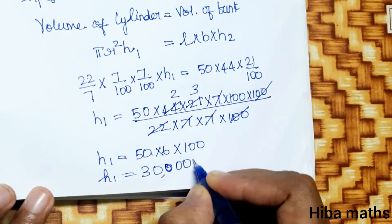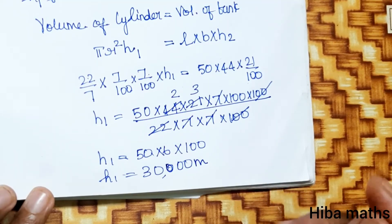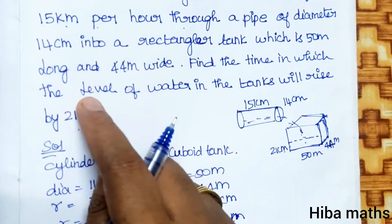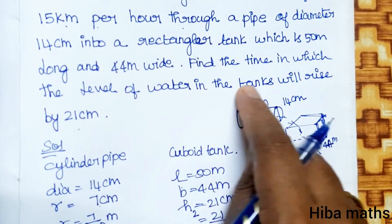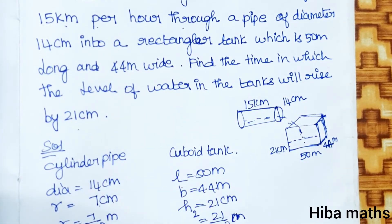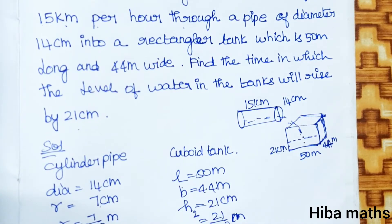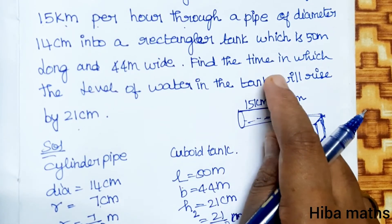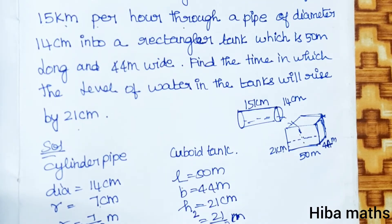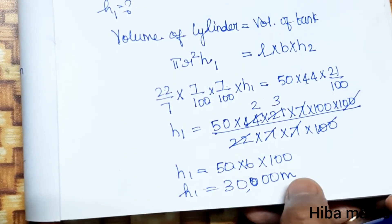30,000 meter. Now we have to find the time in which the level of water in tank will rise by 21 cm. The height is increased by 21 cm over time. If 15 km height is increased in 1 hour...